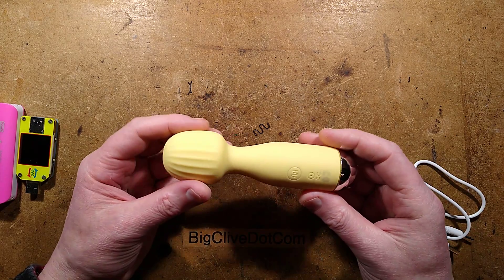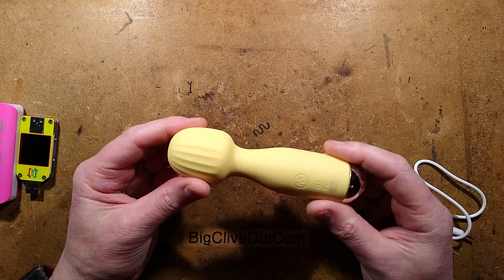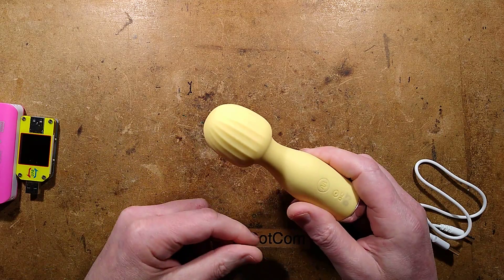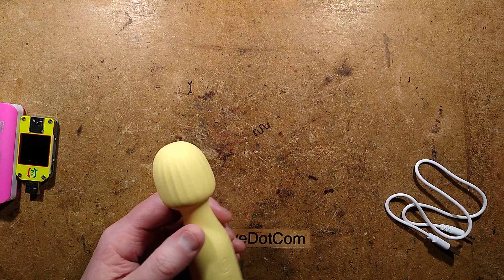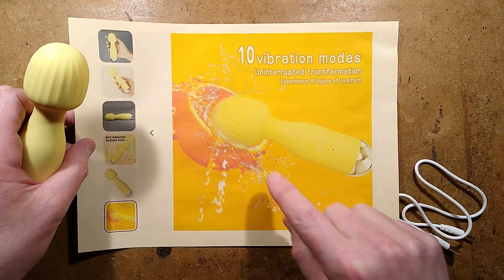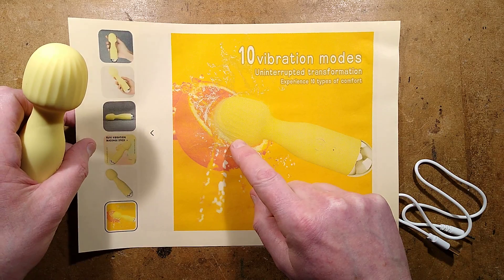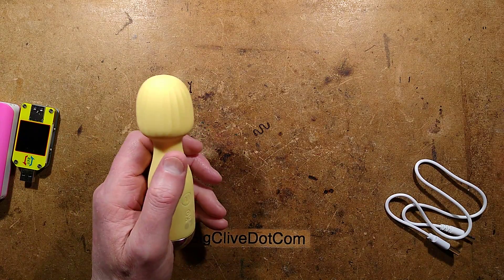Let's take a look at a USB rechargeable vibrating orange juicer from eBay, because that's clearly what it's intended for. The picture on eBay shows an orange being juiced with the orange juicer with its 10 vibrating modes.